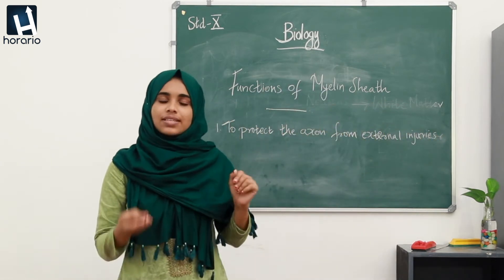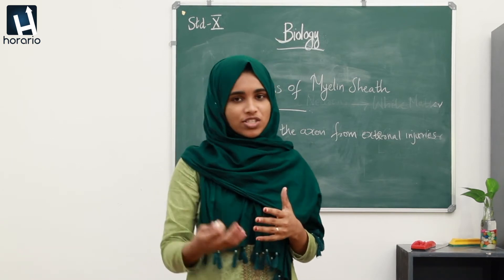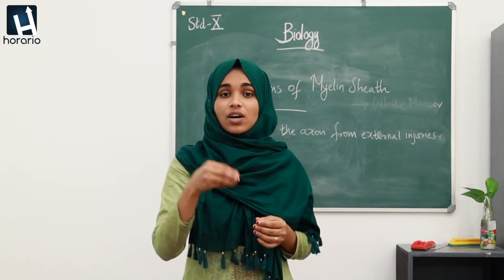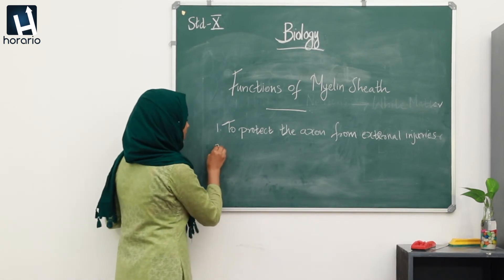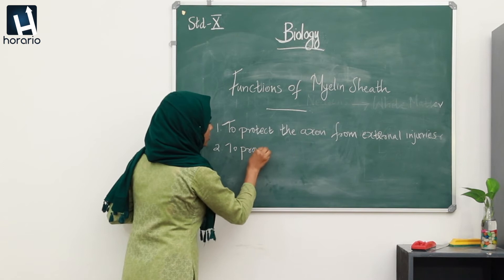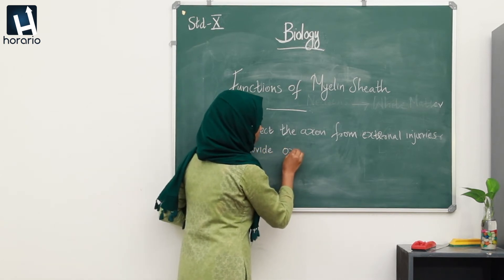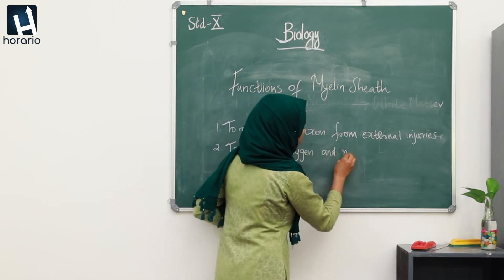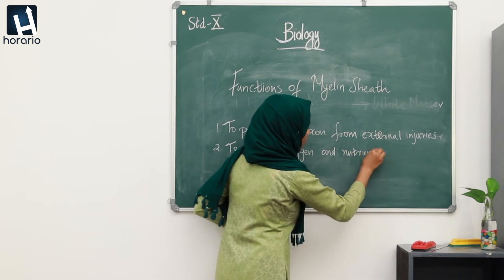Number two: the axons are cells, so they need oxygen and nutrients. The myelin sheath provides enough oxygen and nutrients to the axon.